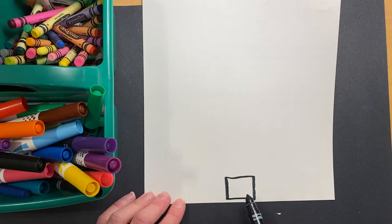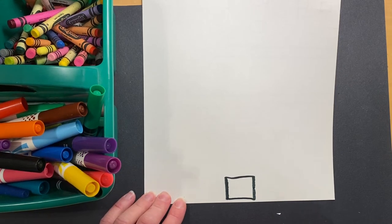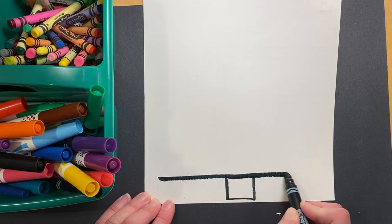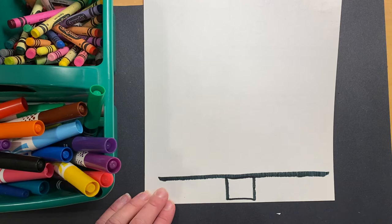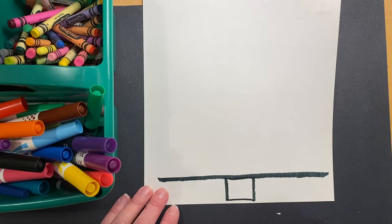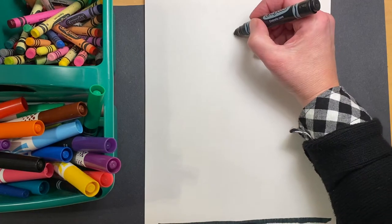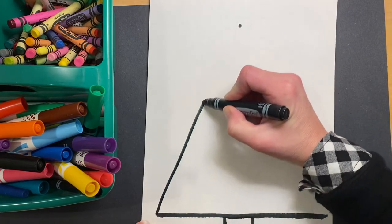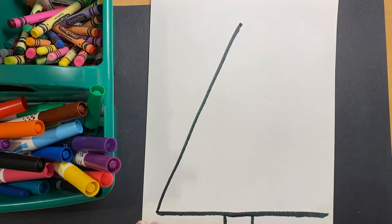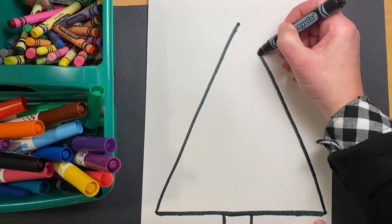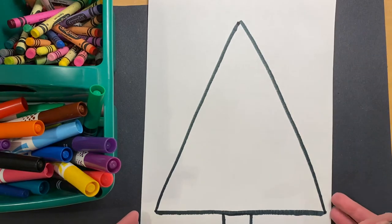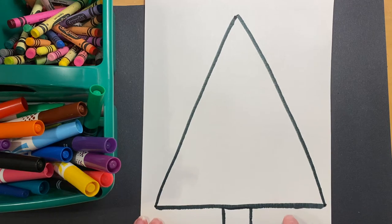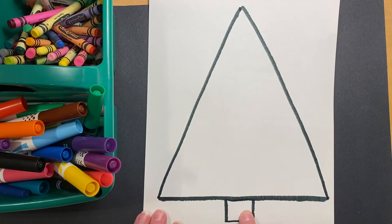We're going to make a pine tree just like Vasily Kandinsky would create. From there, would you draw a straight line across the bottom? And we're going to put a dot towards the top because we're going to connect that bottom corner to the dot and this bottom corner to the dot. So what shape did we make now? You got it. Triangle on top of our square.